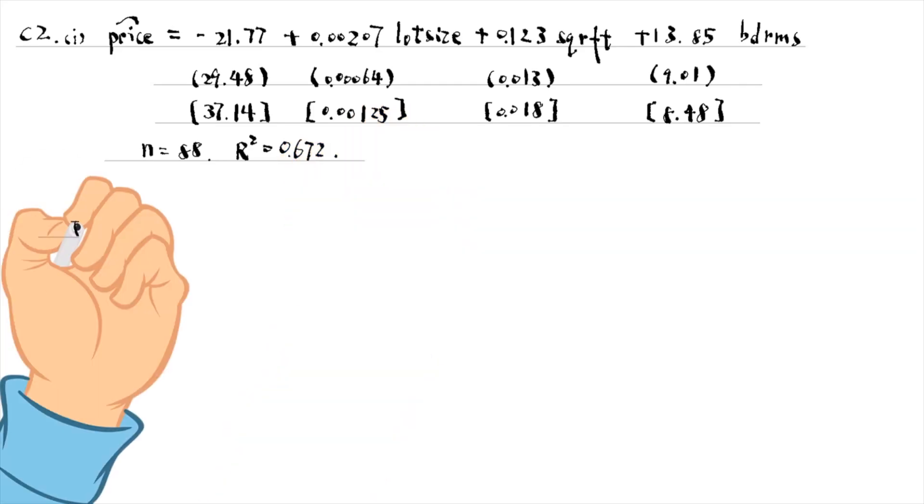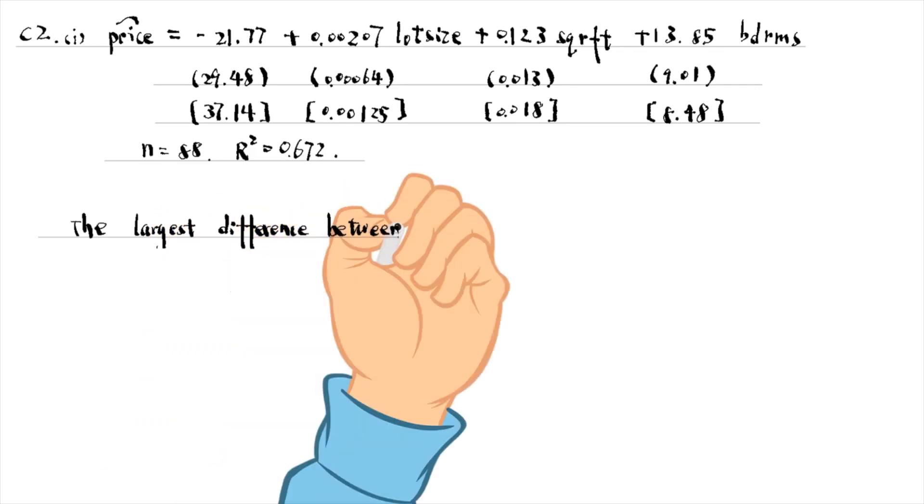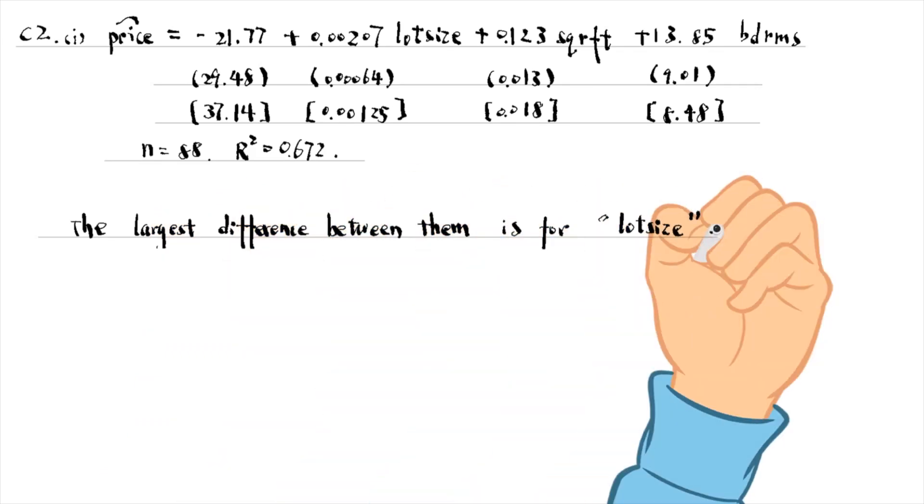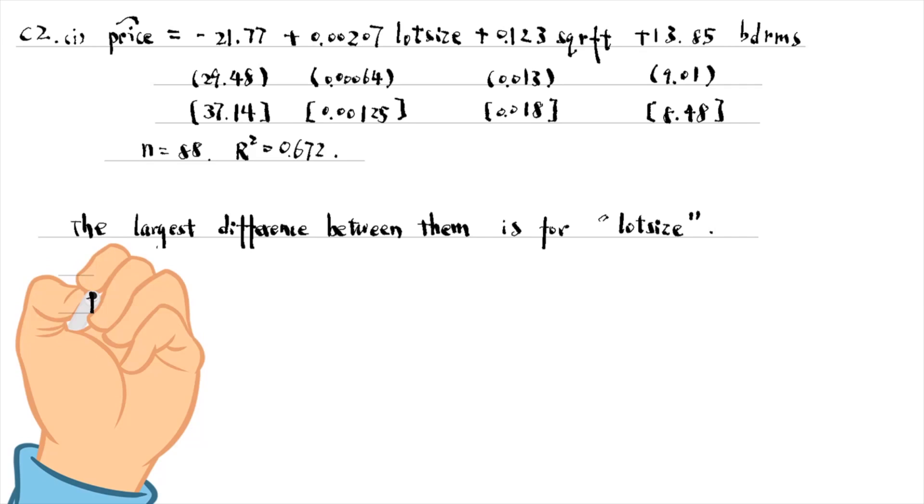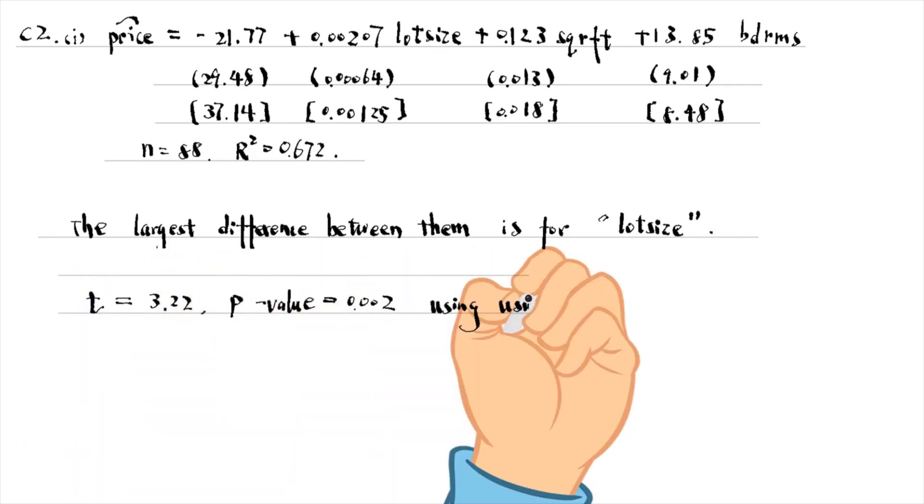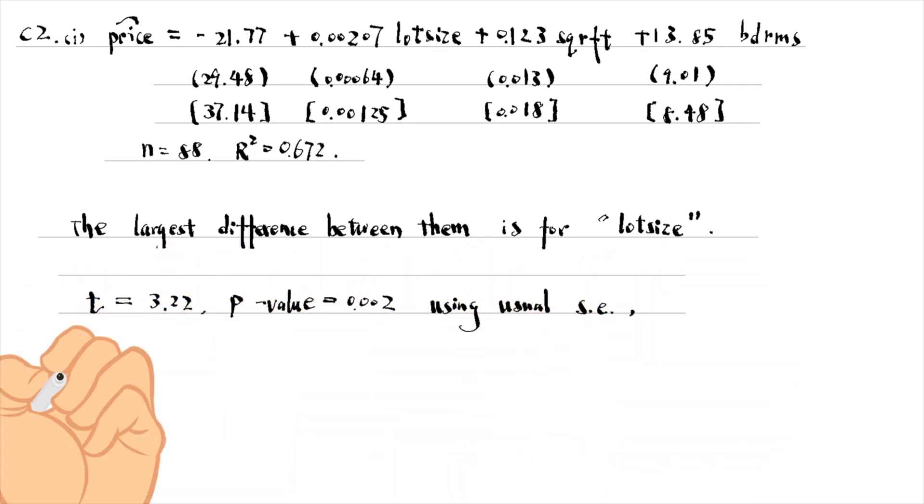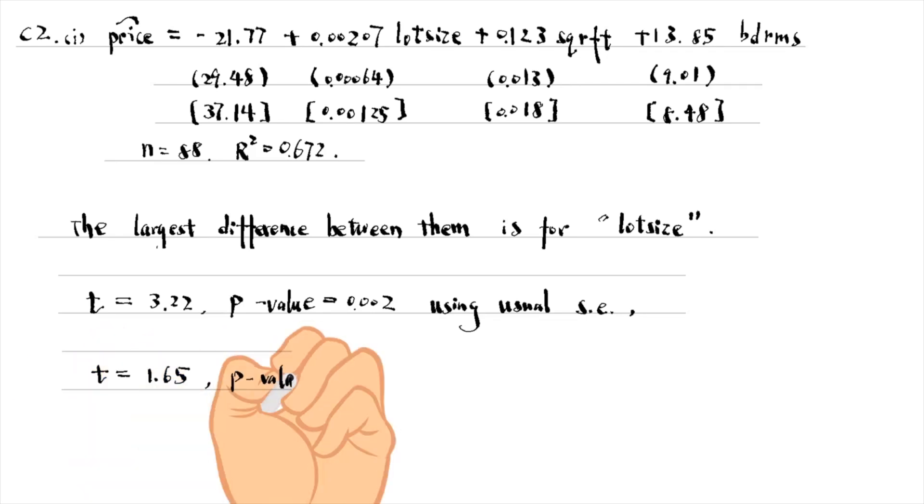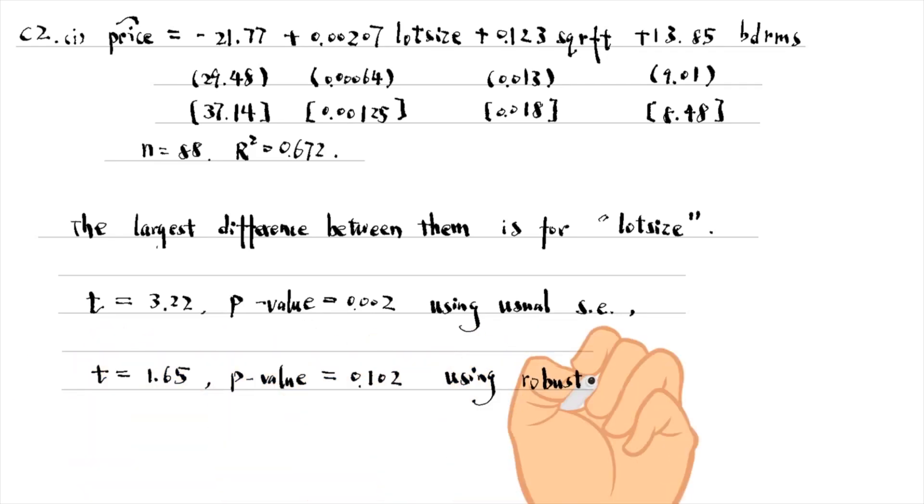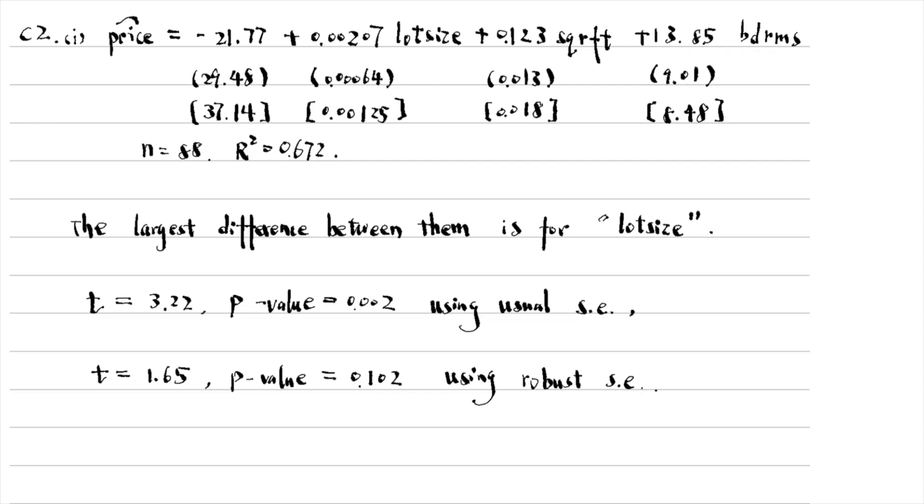The largest difference between standard errors is for the variable of log size. It results in a much smaller t-statistic using the robust standard error. Using the usual standard error, the variable is statistically significant at the 1% level, but becomes statistically insignificant at even the 10% level using the robust standard error.